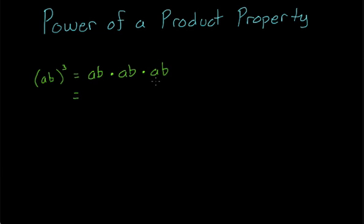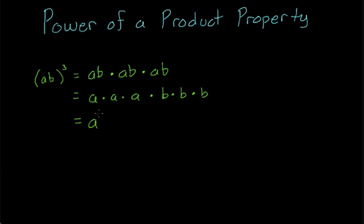Going step by step: using the commutative property of multiplication, we can rewrite this as A times A times A times B times B times B. That will just end up being A cubed times B cubed. So as you can see, if you have a product inside the parentheses, what you end up doing is distributing the exponent on the outside. AB cubed is going to be A cubed B cubed.